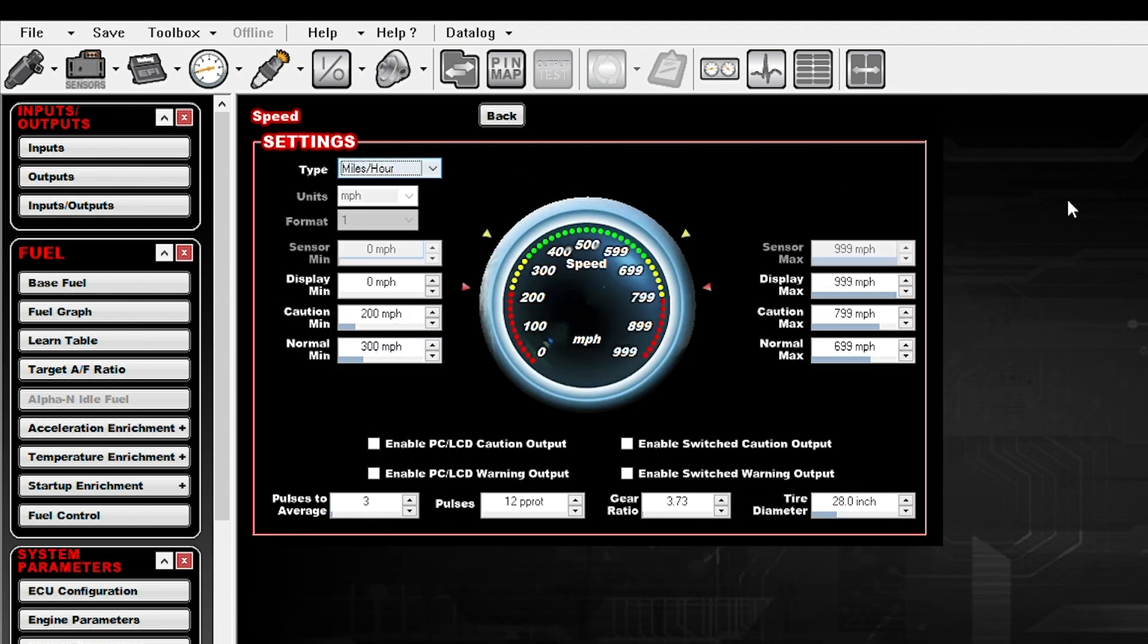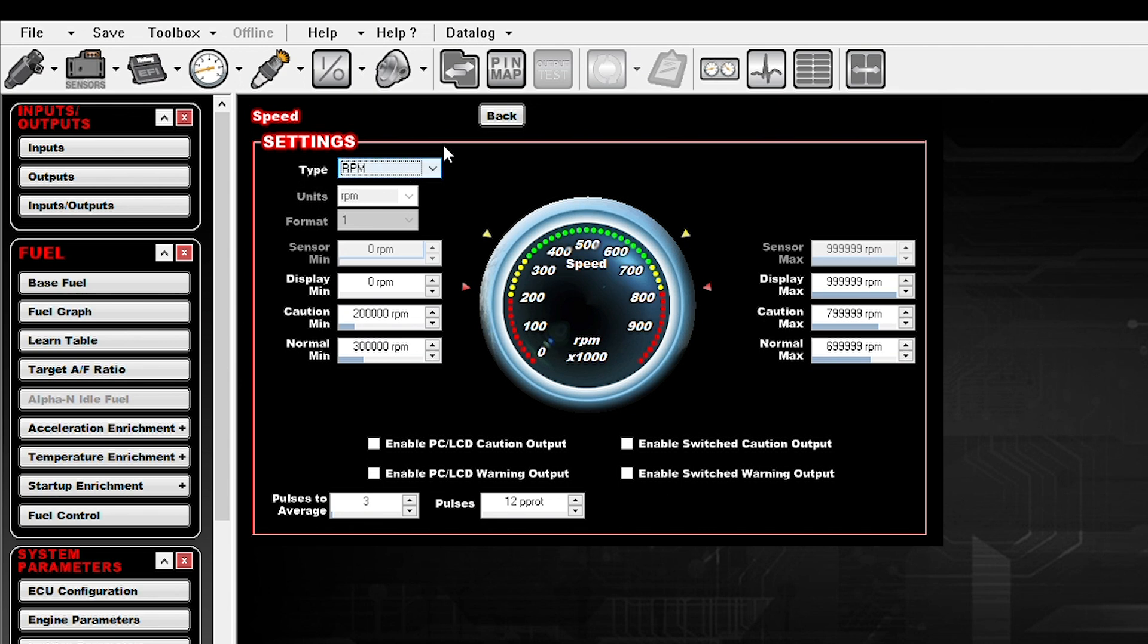So if you want to use this for drive shaft RPM, specifically instead of mile an hour. So if you're only worried about the RPM of the drive shaft, you would simply select RPM as your type in your setup menu. Again, your 12 pulses per rotation, that's going to give you one full rotation. And then you can set up your speeds the same way that you would set up your mile per hour speed.